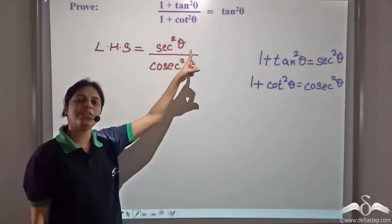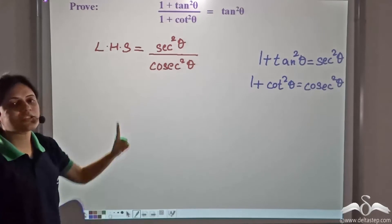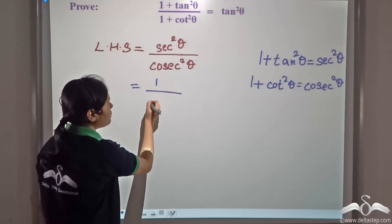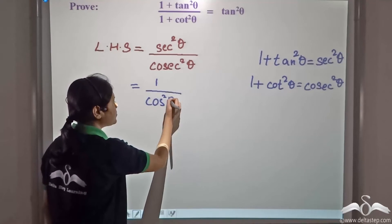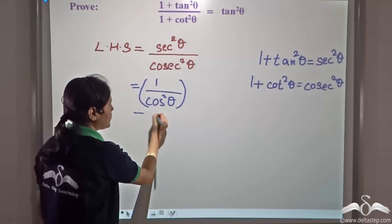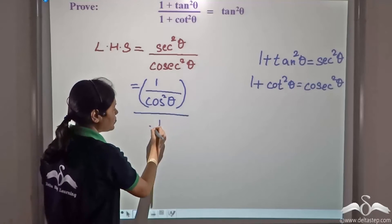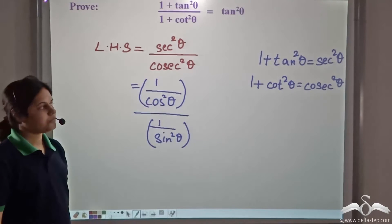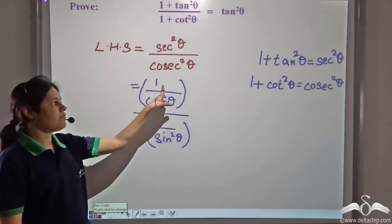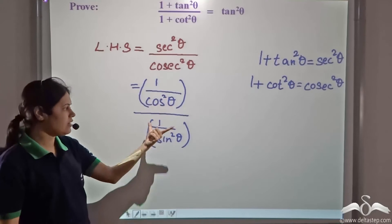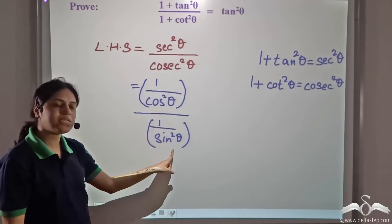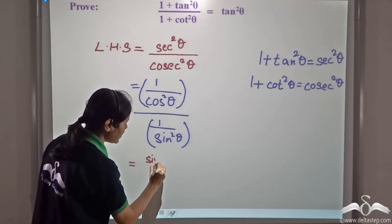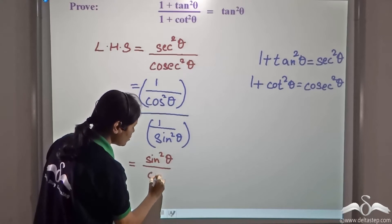Now, sec²θ is the reciprocal of cosθ, so sec²θ can be written as 1 / cos²θ. And cosec²θ can be written as 1 / sin²θ. So this gives us (1 / cos²θ) divided by (1 / sin²θ), which gives us sin²θ / cos²θ.